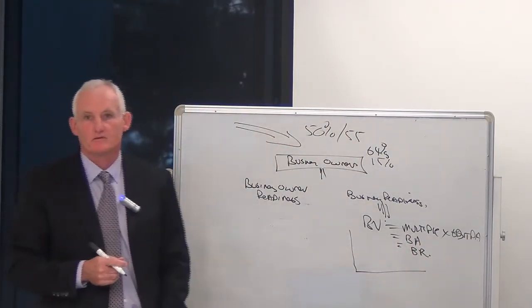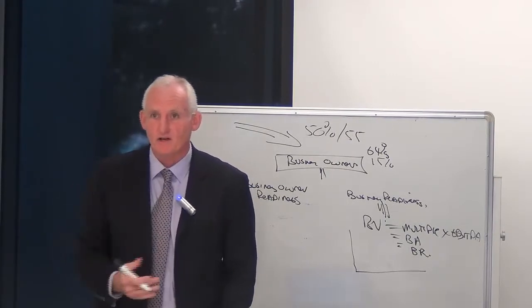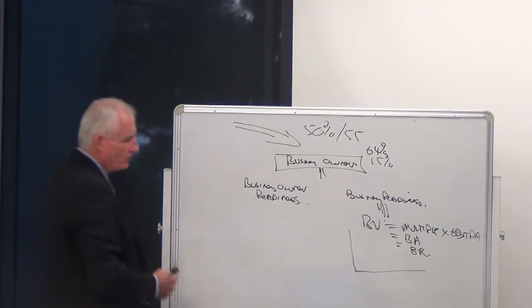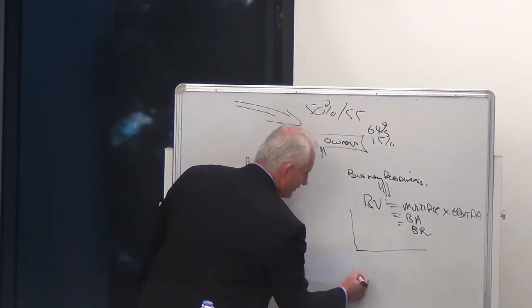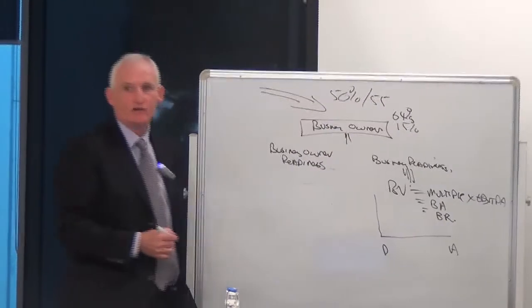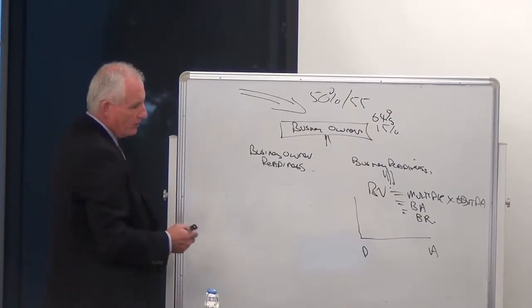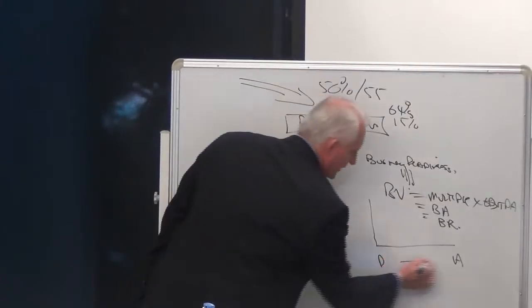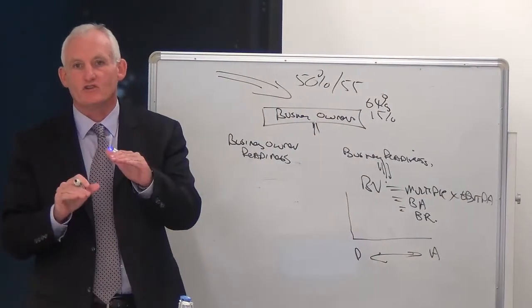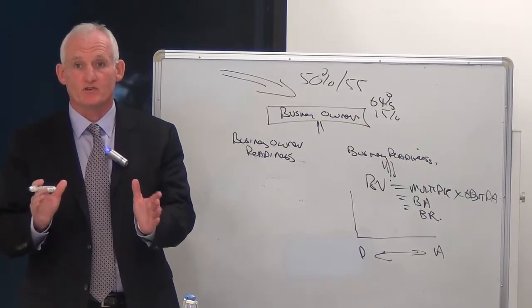What does BA stand for? Business attractiveness and exit readiness or business readiness is the other side. So what we're trying to explain to a business is that all businesses are graded somewhere between D-grade businesses and A-grade businesses. Here are the characteristics of attractive businesses, here are the characteristics of A-grade businesses.